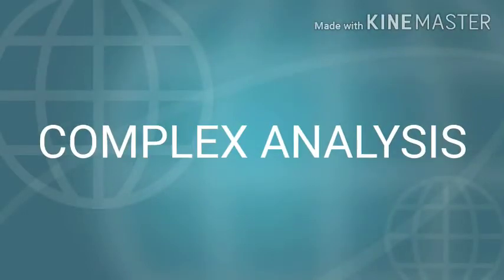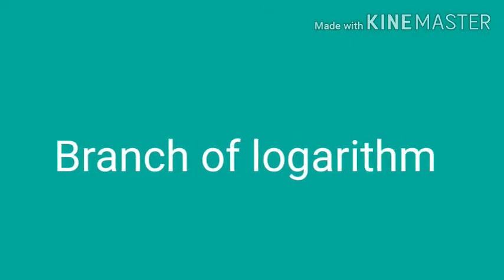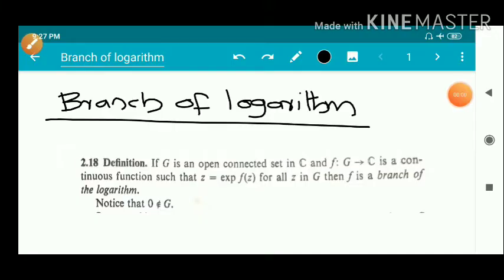Dear students, in this video we are going to discuss about branch of logarithm. Definition of a branch of logarithm: if g is an open connected set in C and f from g to C is a continuous function such that z equals exponential of f(z) for all z in g, then f is a branch of the logarithm. Here, 0 does not belong to g.